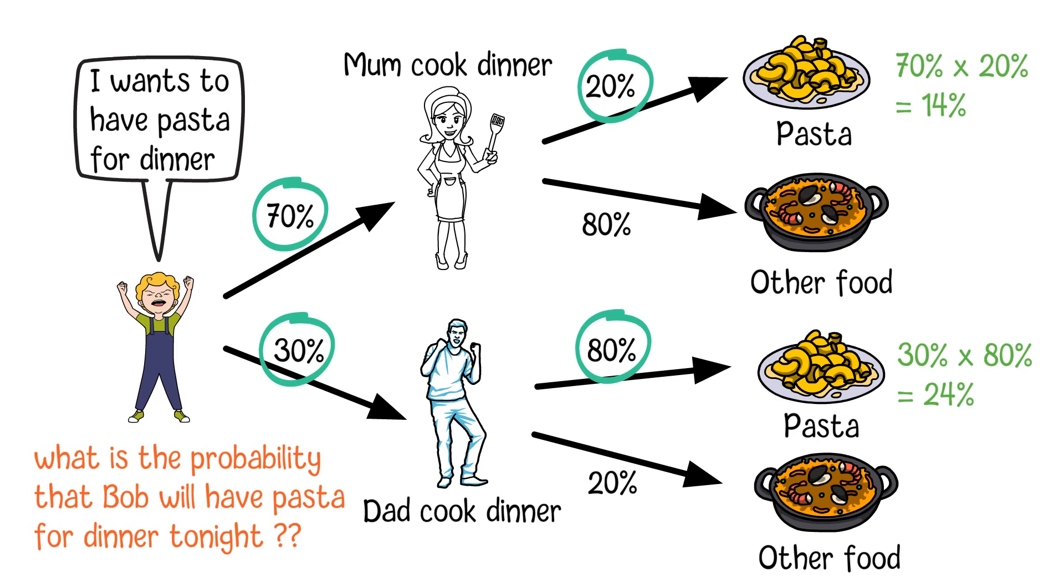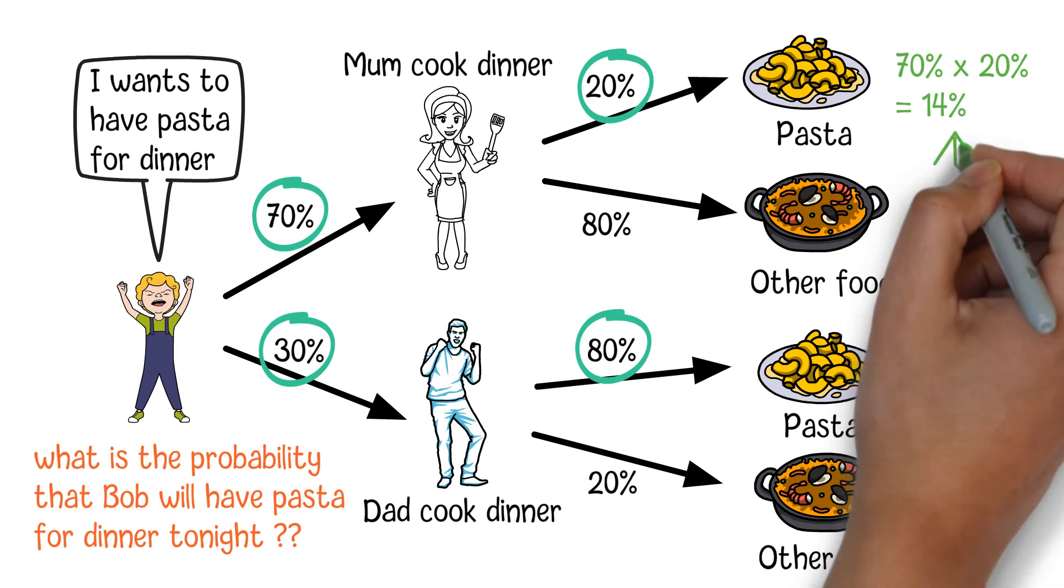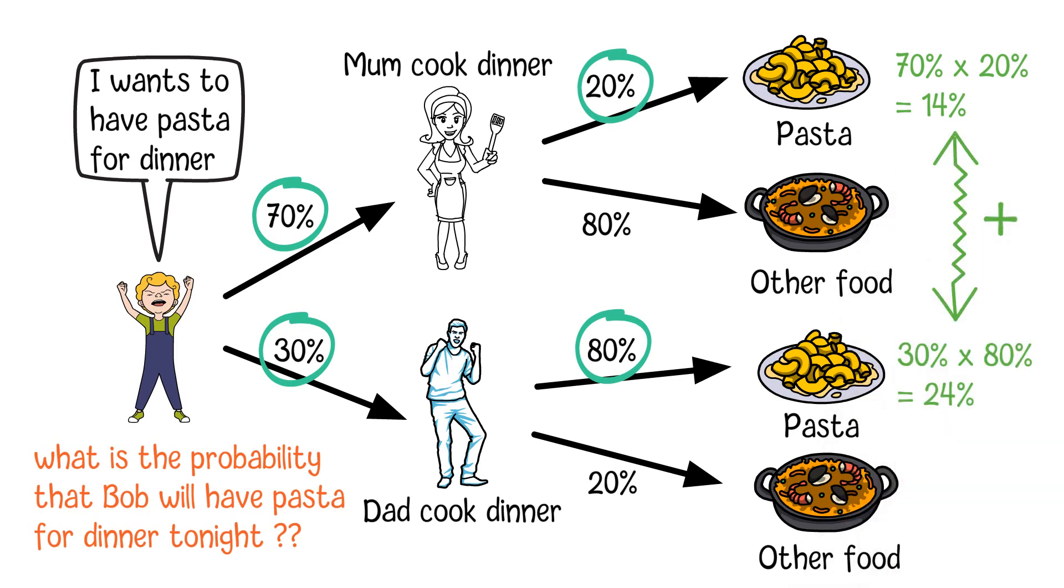So, in total we can calculate Bob will have a probability of 14% plus 24% equals 38% to have pasta for dinner.